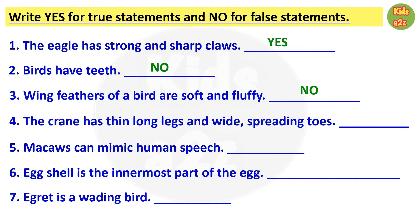Number 4, the crane has thin long legs and wide spreading toes — this one is true, so yes. Number 5, macaws can mimic human speech — also true. Number 6, egg shell is the innermost part of the egg — this one is false, because egg shell is the outermost part of the egg. Number 7, egret is a wading bird — this one is true.